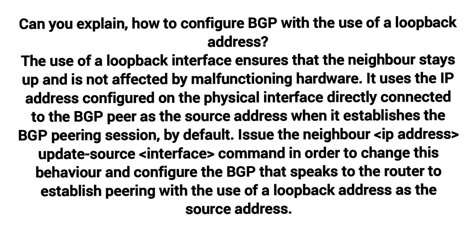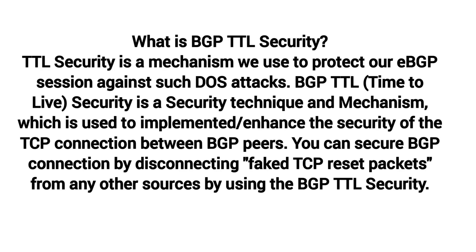Can you explain how to configure BGP with a loopback address? The use of a loopback interface ensures that the neighbor stays up and is not affected by malfunctioning hardware. By default, BGP uses the IP address configured on the physical interface directly connected to the BGP peer as the source address when establishing the BGP peering session. Issue the 'neighbor <ip-address> update-source <interface>' command to configure BGP to establish peering using a loopback address as the source address.